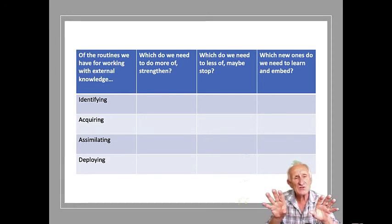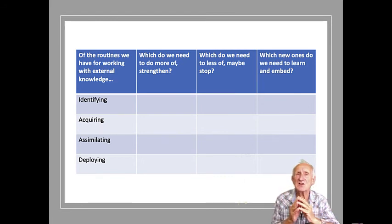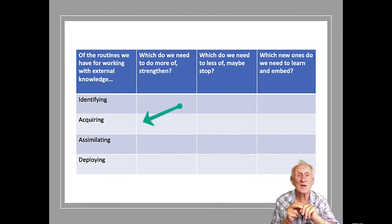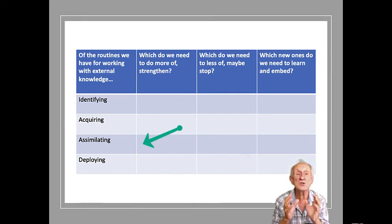We want to apply these questions to think about the key tasks in absorptive capacity: those routines around identifying useful external knowledge, those routines around acquiring external knowledge, those routines around assimilating it, connecting it with what we know and do, and those routines around helping us deploy it into products, processes, and services.